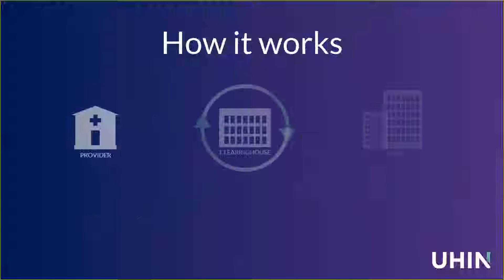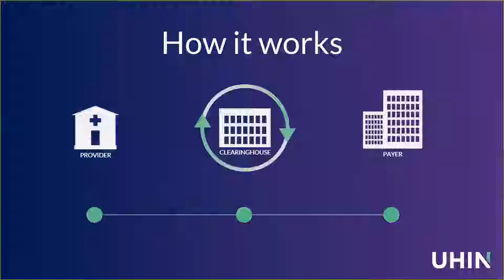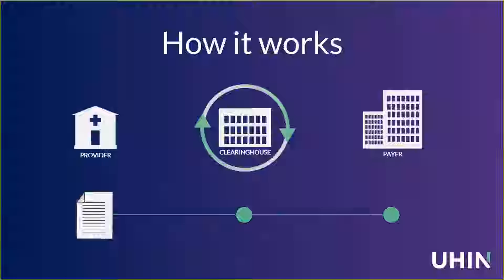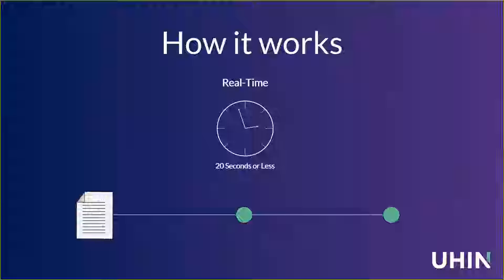There are two main ways that eligibility can be transacted. The first way begins with the provider creating the eligibility request — some basic information about the patient or subscriber — this is the 270. It gets sent to the clearinghouse, then to the payer, and the payer responds back with the coverage and benefits on the same connection. This is considered real time and takes 20 seconds or less on average. Real-time requests and responses are usually individual transactions — a single patient or subscriber.